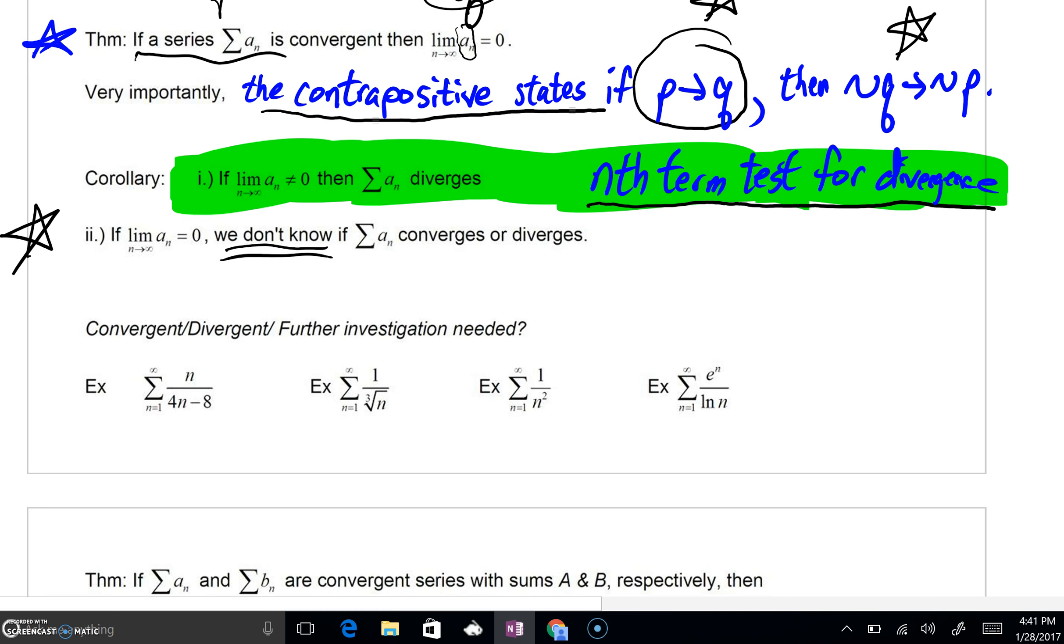Take a look here. We're going to use this nth term test to see. I'm going to take the nth term, and let's take the limit as n goes to infinity of n all over 4n minus 8. And by n behavior, I hope you can see that this minus 8 is inconsequential. The n's would cancel. You're going to arrive at 1/4. That means that this is not equal to zero. We can say that this series, right here, diverges.